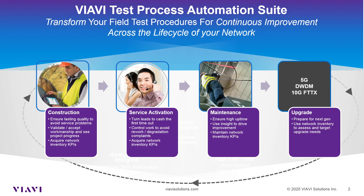Next we have service activation. The most important thing is that we're able to turn up service when we tell a customer we will do so. We want to make sure that process is well controlled and we also want to leave the customer with a good margin of service so that they don't have degradation and aren't calling with complaints quickly thereafter. We also want those KPIs, and the Stratasync TPA Suite allows us to grab those.